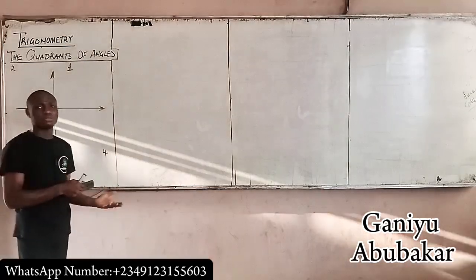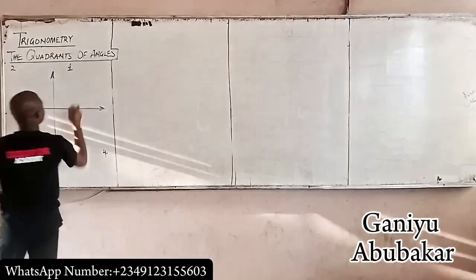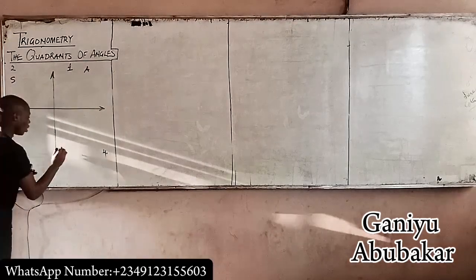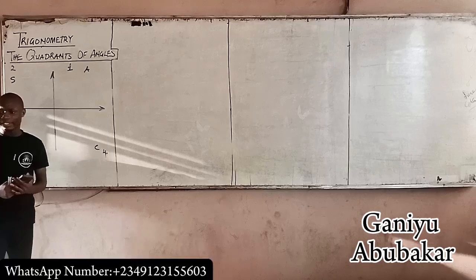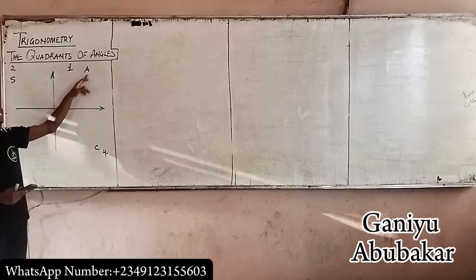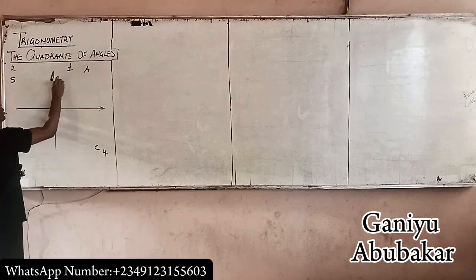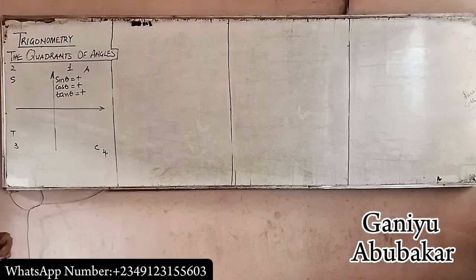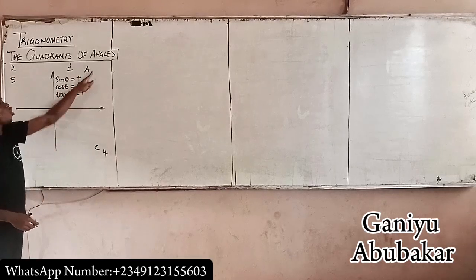I use one key concept to master this: 'All Students Taste Coffee.' This becomes A, S, T, C. 'All' means both sine, cos, and tan are positive in the first quadrant. So for my first quadrant, sine theta is positive, cos theta is positive, and tan theta is also positive.